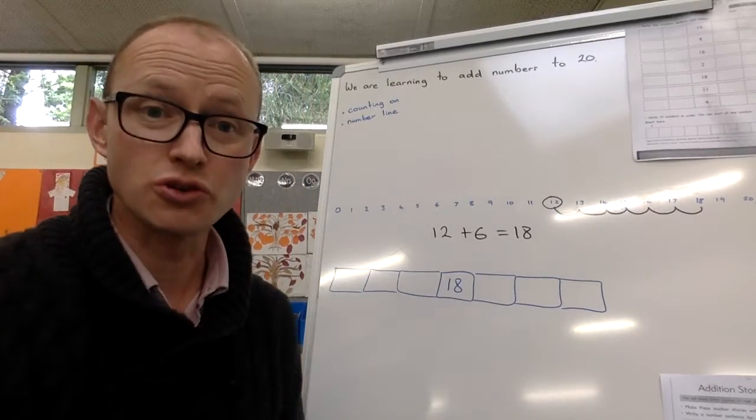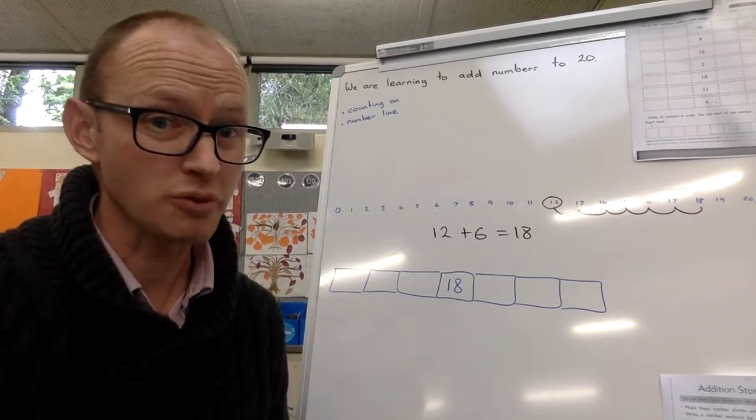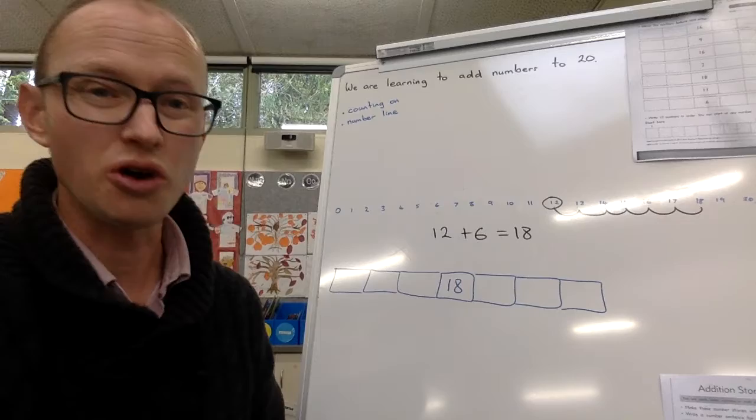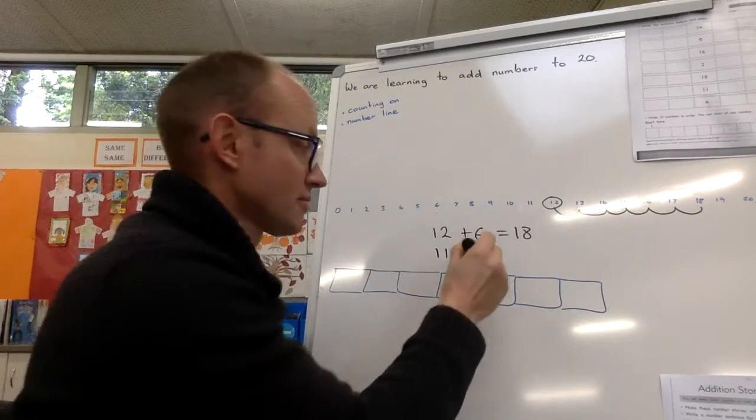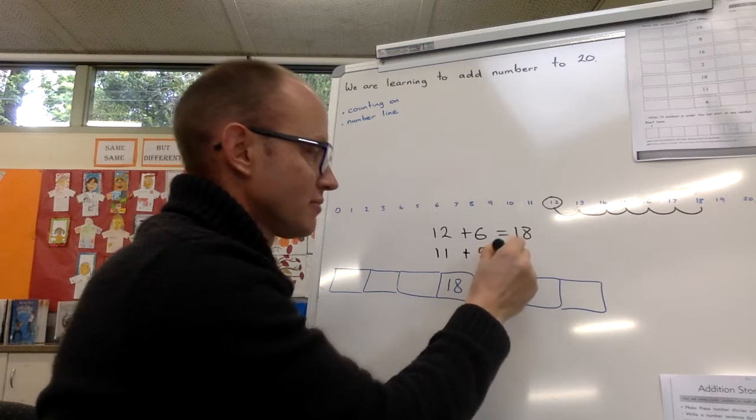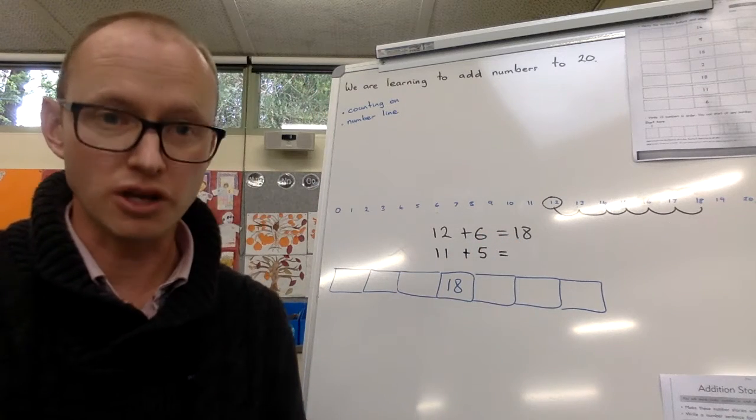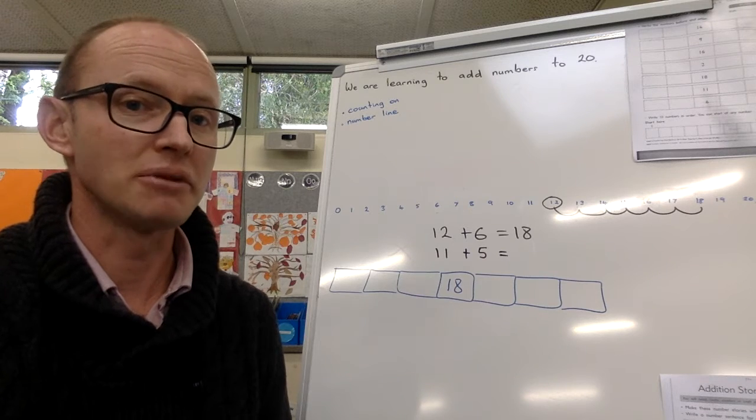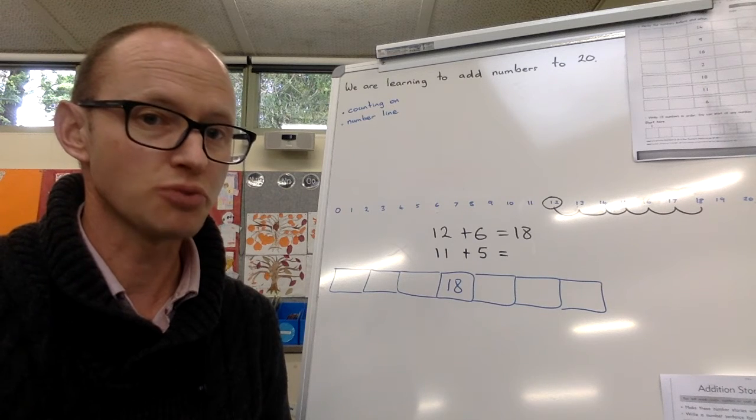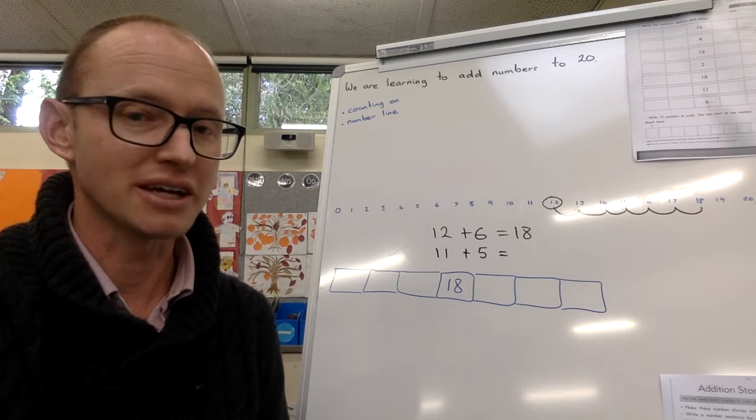This next one I want you to do by yourself. So you might need to push pause perhaps if you haven't already got the number line, or you might be able to do it pretty quick as well. So the number is 11, plus 5. So think about what are you counting on from, what number do you need to circle, how many jumps you need to do. Push pause, work that out for me, and then push play again.